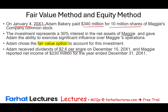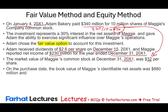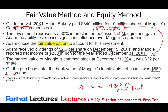Adam received a dividend of $2.60 per share on December 15th, and Maggi reported net income of $230 million for the year ended X1. The market value of Maggi's common stock as of December 31st was $32 per share. Note that we purchased the shares at $34 per share ($340 million divided by 10 million shares), so by year-end the share price had dropped to $32. On the purchase date, the book value of Maggi's net identifiable assets was $880 million.